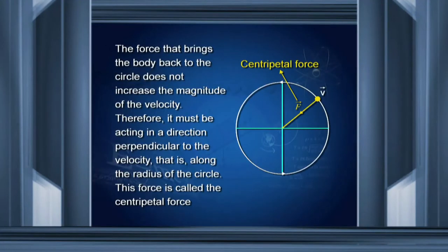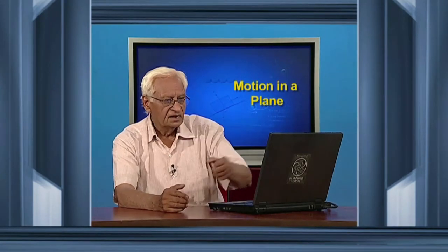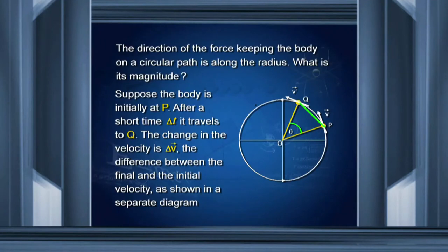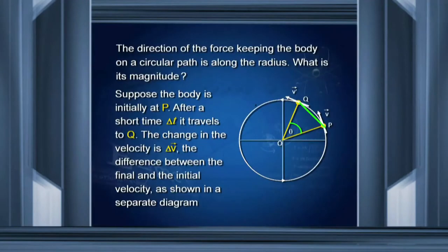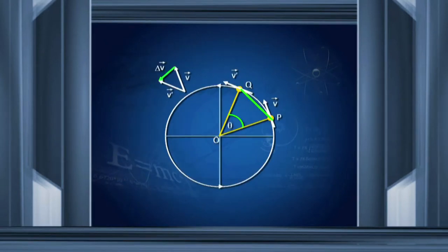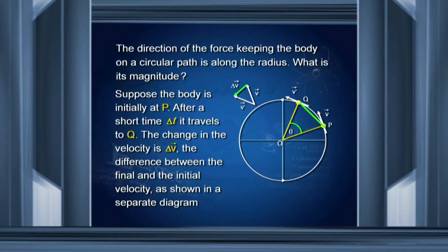What is the magnitude of this force? To find that, we take the body to be at point P, moving with velocity v along the tangent. After a very short time Δt, it moves to Q, again moving along the tangent with velocity v. The angle covered is θ. The velocity at P is v and at Q is also v. I have drawn parallel lines, and the change in velocity is Δv.